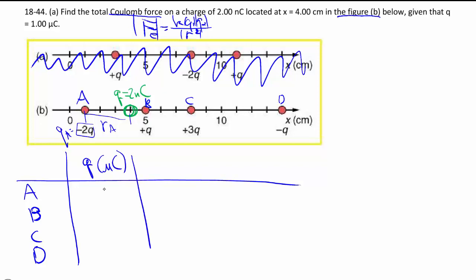So minus 2q, so that's minus 2 times 1 microcoulombs. B has positive 1, positive 3. And then this one way out here has negative 1 microcoulombs. Micro being 10 to the minus 6. So then, in terms of direction, we look at them on a 2 by 2 basis.